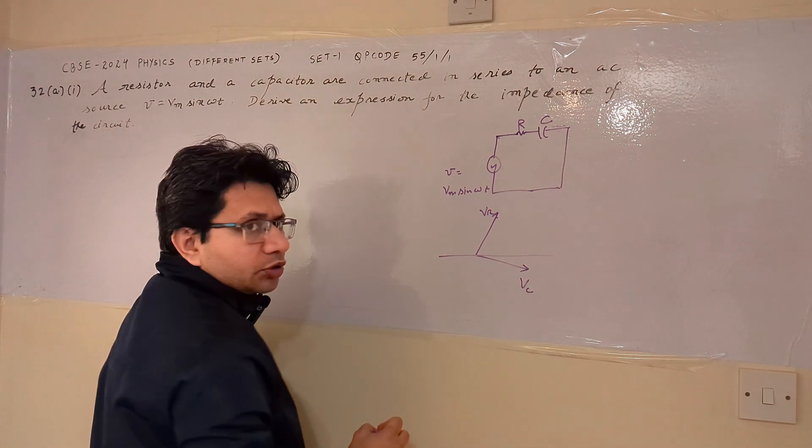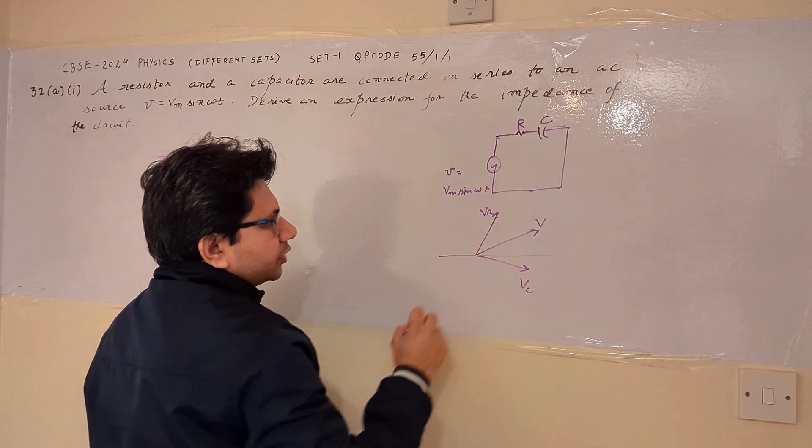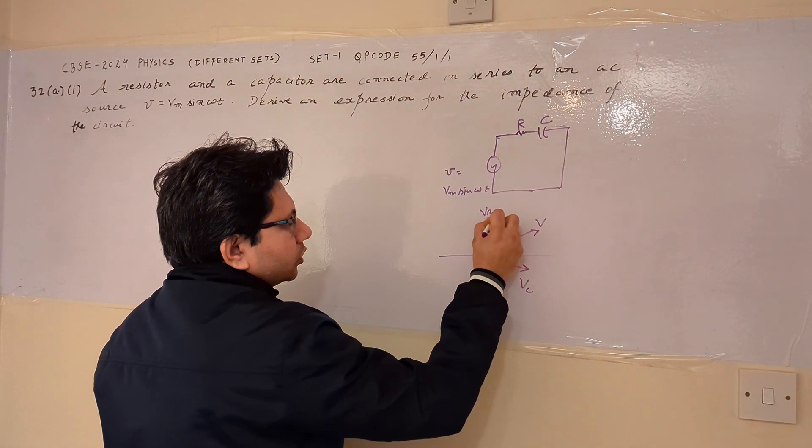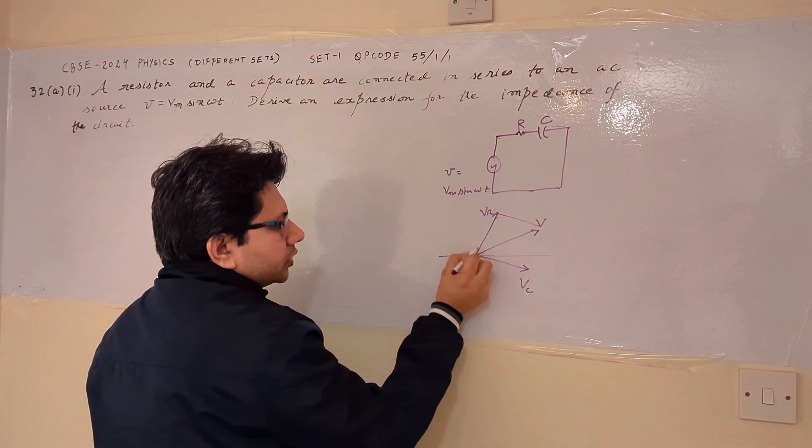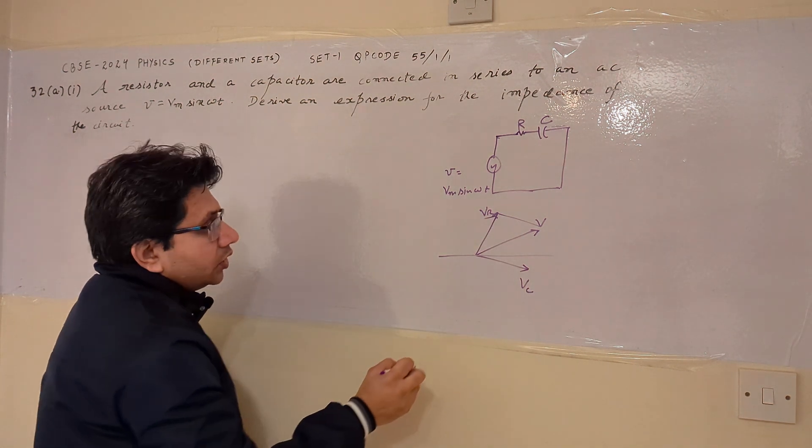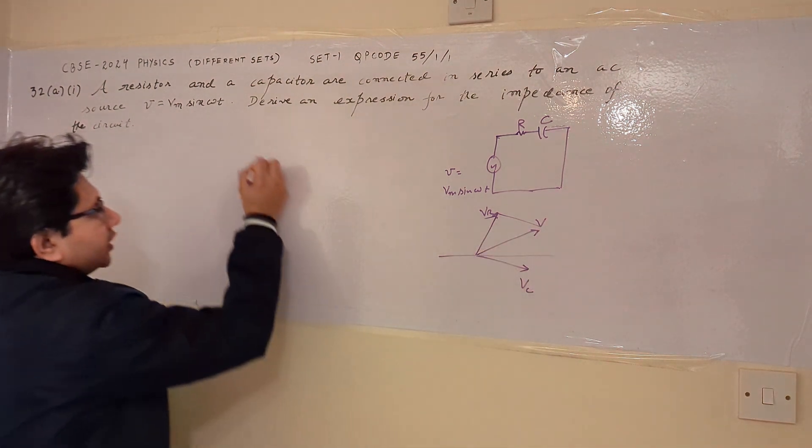This is the phasor corresponding to the capacitor and the resultant is the phasor corresponding to the applied voltage. Now the difference, the angle difference between Vr and Vc is 90 degree and we can say that now from this particular phasor diagram,